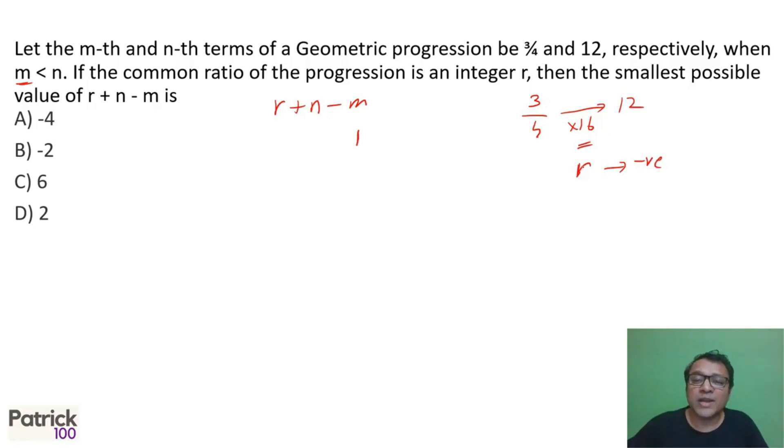I can't put minus 16 because then it will come 3 upon 4 and then minus 12. So I can put minus 4, minus 4 into minus 4 is minus 16. So in which case I can put, since r squared is equal to 16, so r I can put as minus 4. So I get r as minus 4. So I'll get first term as 3 upon 4. Second term as minus 3. Third term as 12. So in that case, n will be 3.